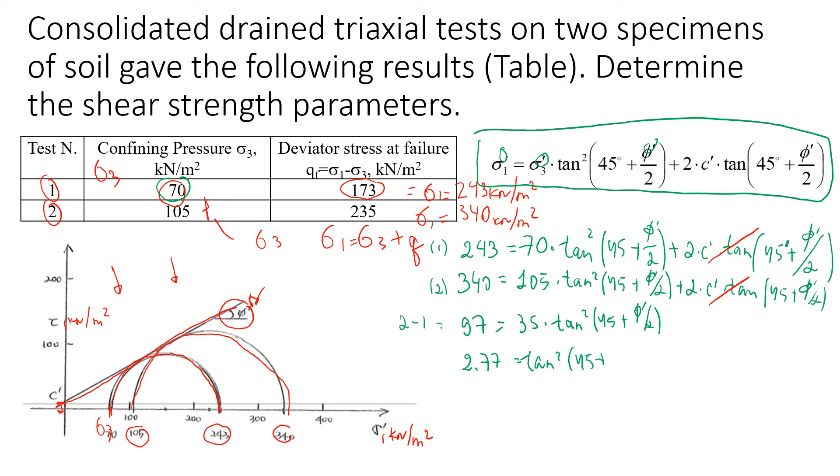We have power of 2, so we need to take a square root of 2.77, and that will be 1.66, which will be just tangent of (45 plus friction angle divided by 2).